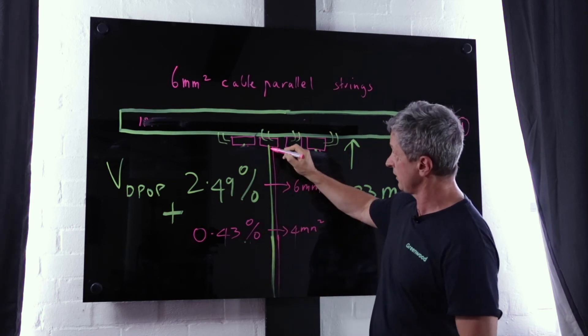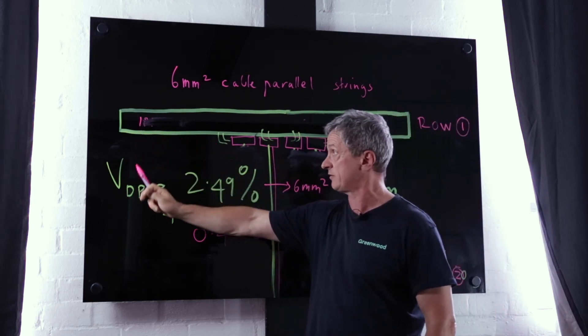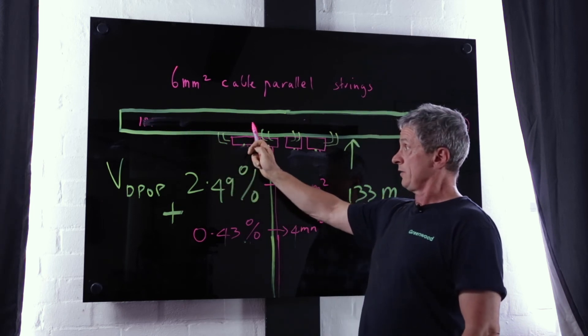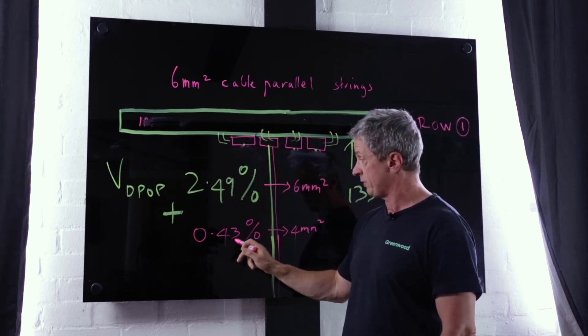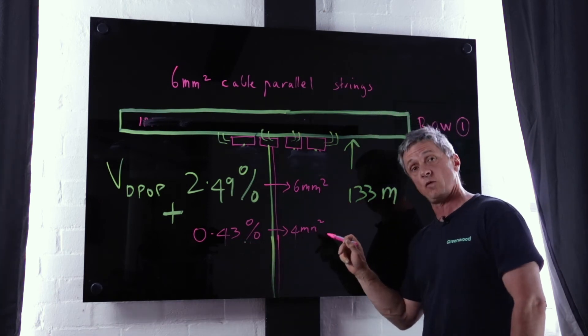Now that's getting a little bit close to that 3% so it probably is advantageous on this row to use 6mm all the way through to bring that overall volt drop calculation down the percentage.